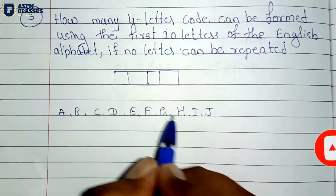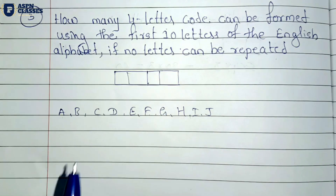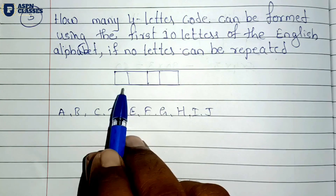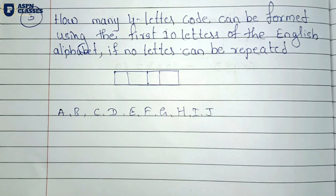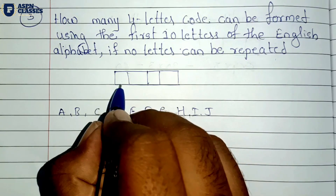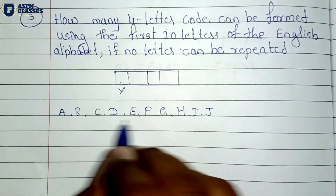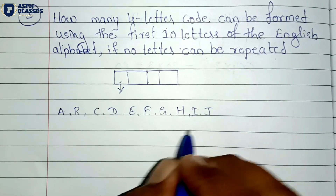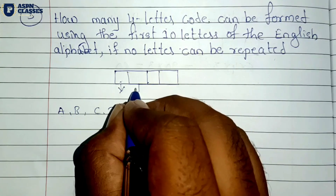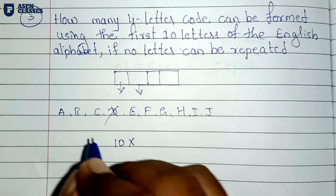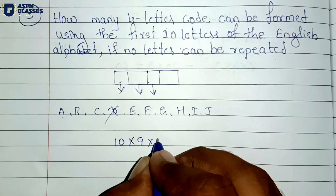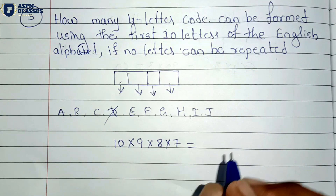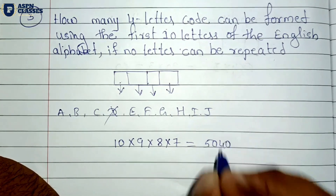We will use these 10 letters. Since no letter can be repeated, for the first place we have 10 choices, second place 9, third place 8, and fourth place 7. By the multiplication principle: 10 into 9 into 8 into 7 equals 5,040. So the total number of arrangements is 5,040.